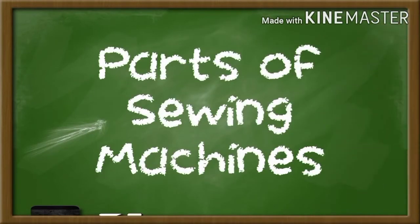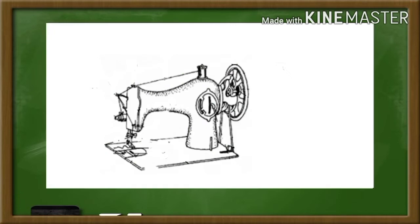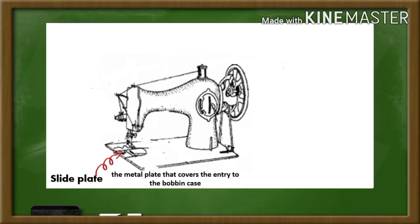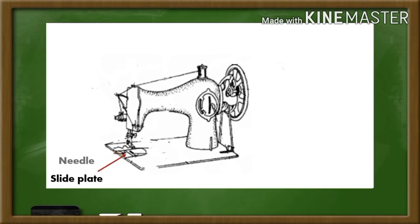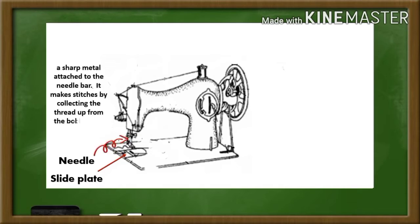Now, let us discuss the parts of the lock stitch sewing machine. The first part is the slide plate. The slide plate is a metal plate that covers the entry to the bobbin case. Next is the needle. It is a sharp metal attached to the needle bar. It makes stitches by collecting the thread up from the bobbin and inserts it through its tiny hole.